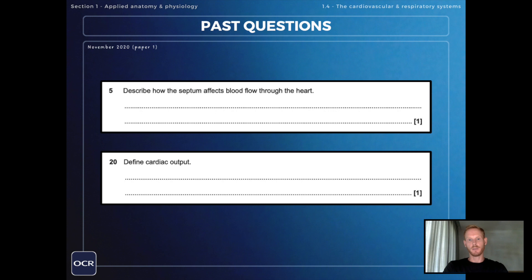Next, describe how the septum affects blood flowing through the heart. So the septum divides the left and right sides of the heart. You're not actually going to get a mark for that one. The way it affects blood flow through the heart is it keeps oxygenated blood on the left side separate from deoxygenated blood on the right side.